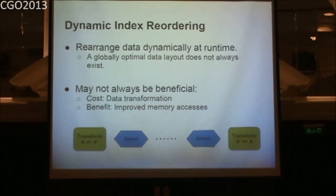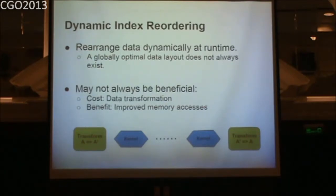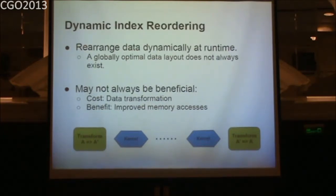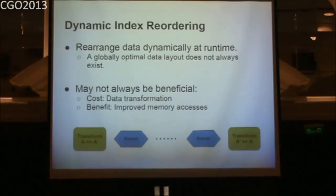With dynamic index reordering, if you have a sequence of kernels where the globally chosen layout is not optimal, we transform array A into array A prime — essentially a matrix transpose, changing the data layout dynamically at runtime. We then execute the kernels accessing A prime in an optimal way, and afterwards transform the array back to the original layout. However, this transformation is not always beneficial because there's a cost to doing it; if the cost exceeds the benefit, it's not a good idea.